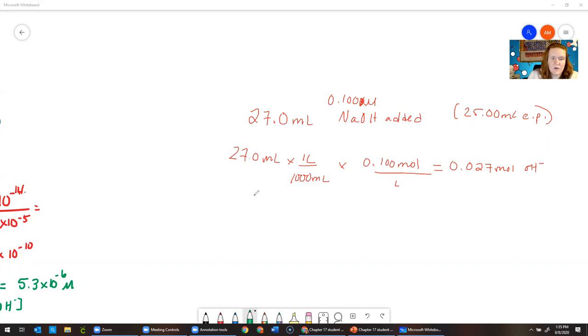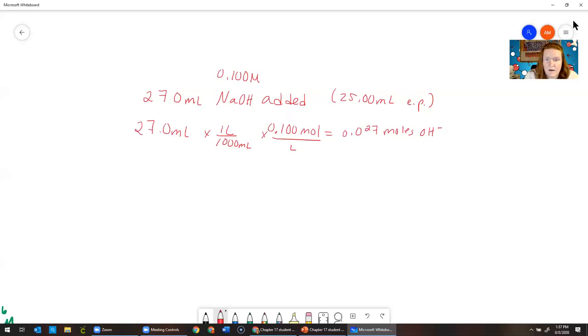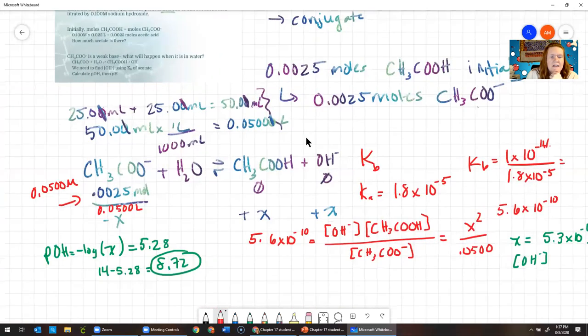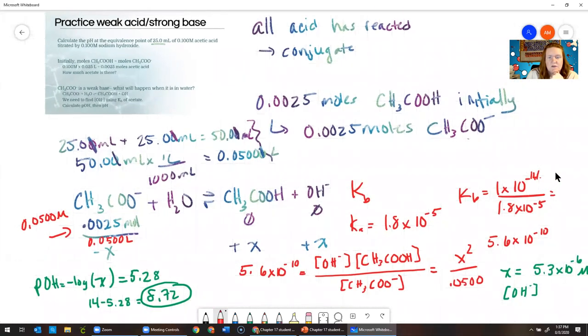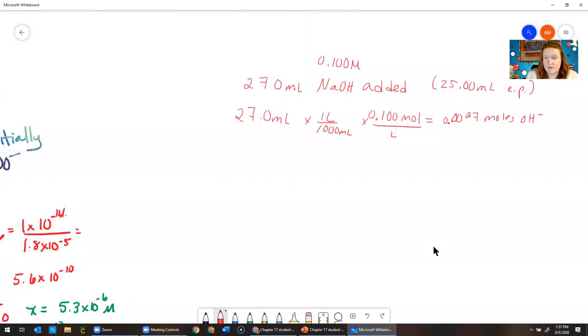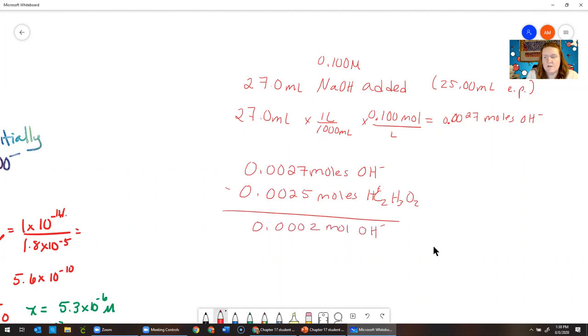We've added that much base. To figure out the excess, we will look and see how much was used. That's 0.0027 moles. We go back and see how much acid did we have in the beginning—0.0025 moles. We're going to subtract those two numbers. If we've added that many moles of base, this is a one-to-one reaction, so we can just subtract the moles of acid. How much of this base reacted? That leaves us with a pretty small amount of hydroxide.